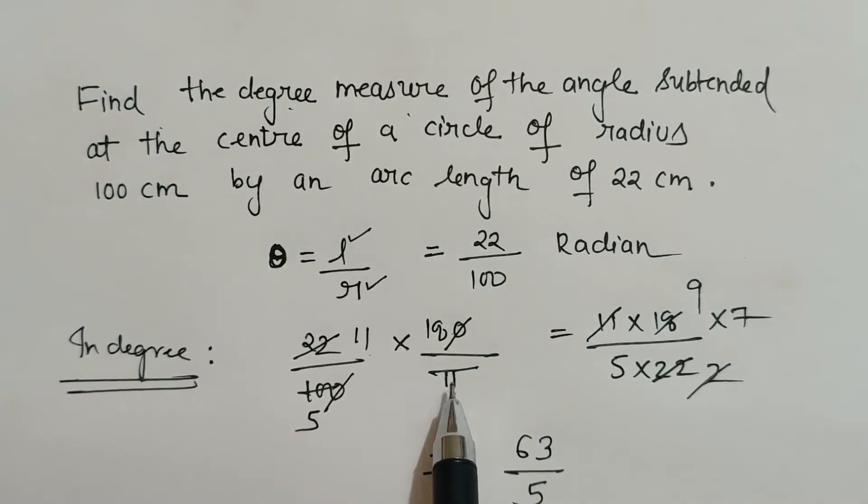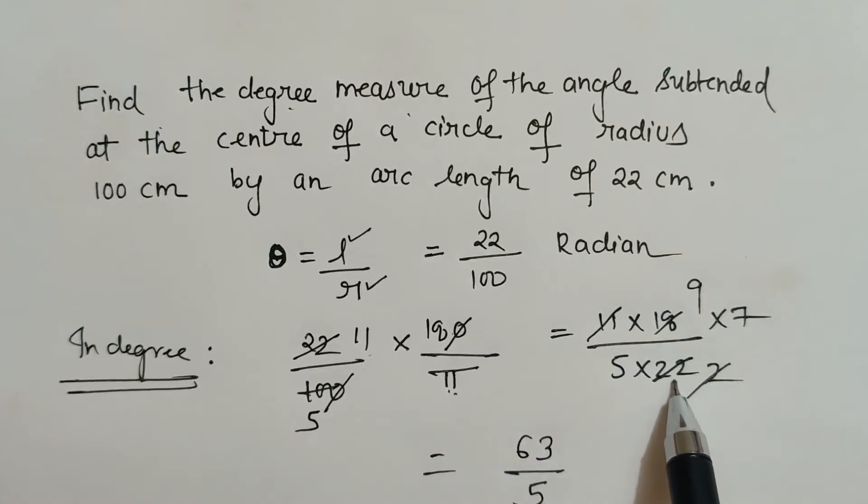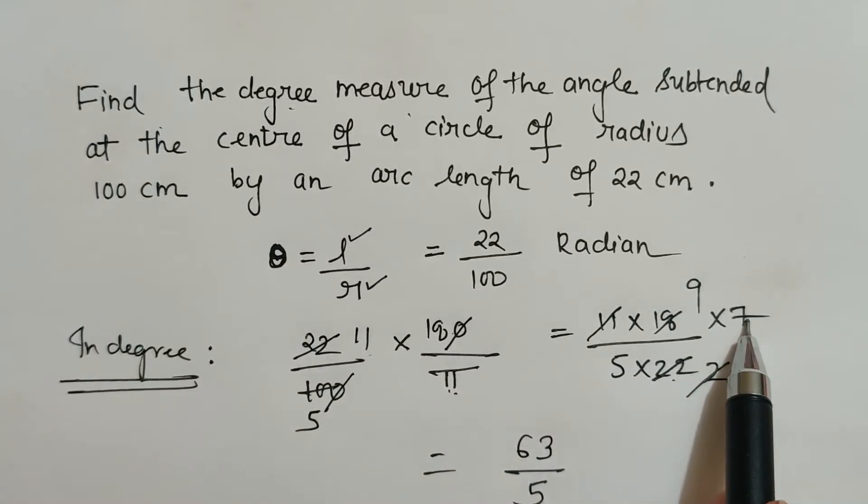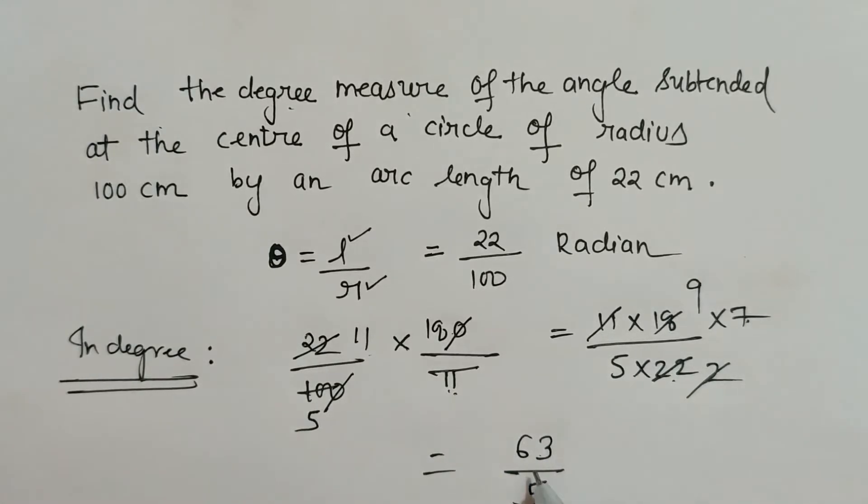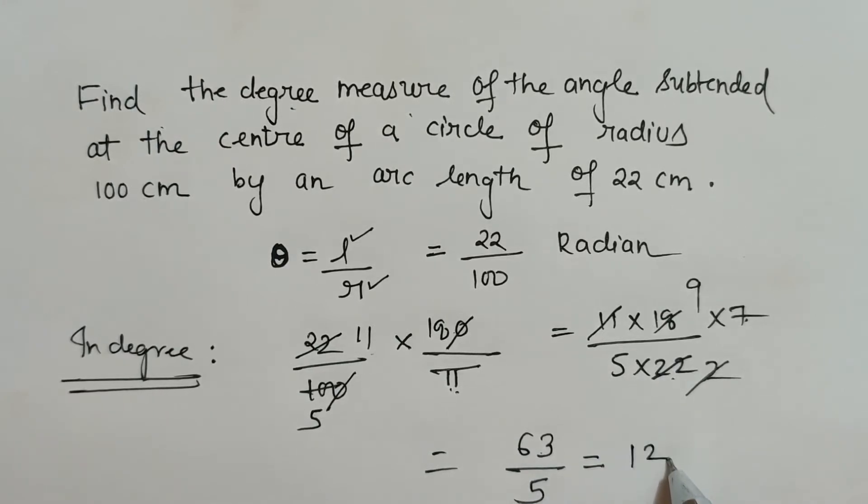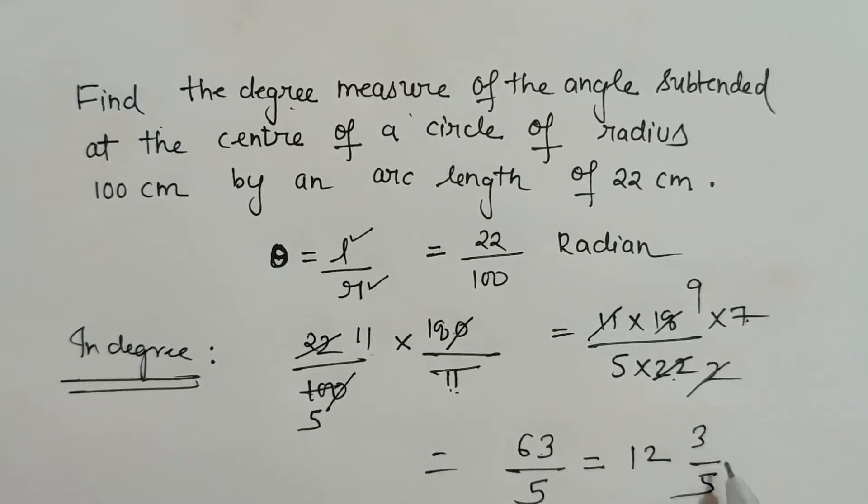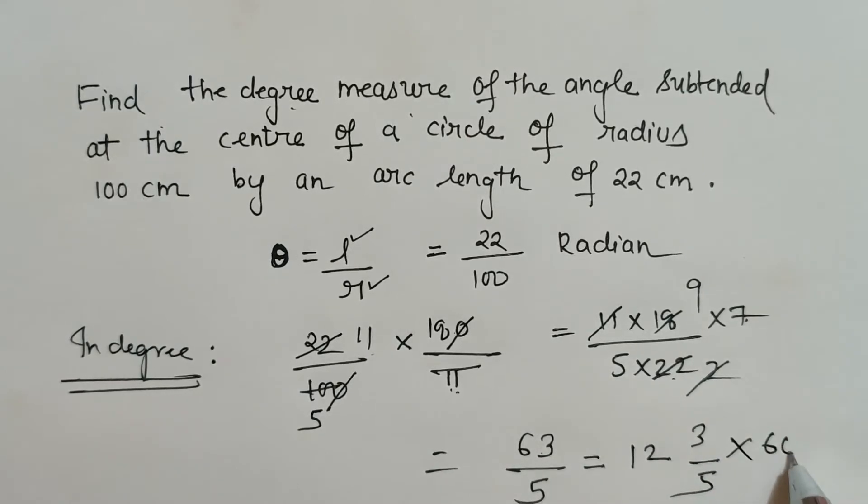Pi is further substituted as 22 by 7. Now here 63 by 5 when divided we get 12 3 upon 5. As it can further be simplified, we will multiply it with 60.